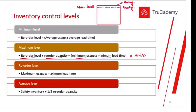The next level is the minimum level — let's say 300 kilograms for this organization. As we start using inventory from the maximum level of 1,000 kilograms downward, when we reach the minimum level of 300 kilograms, this acts like an alarm or internal control signal indicating we are now at the minimum level of inventory and should reduce usage.